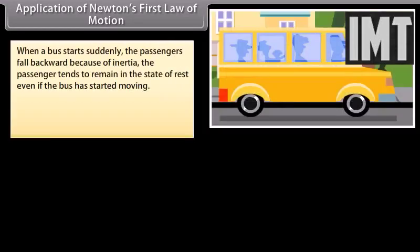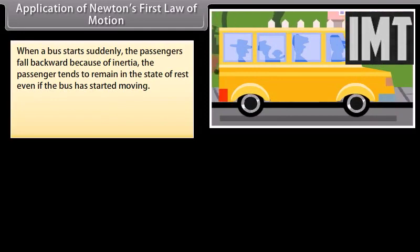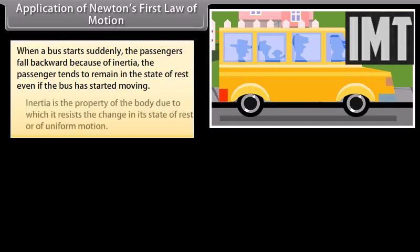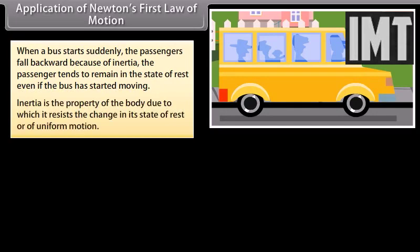When a bus starts suddenly, the passengers fall backward because of inertia. The passenger tends to remain in the state of rest even if the bus has started moving. Inertia is the property of the body due to which it resists the change in its state of rest or of uniform motion.